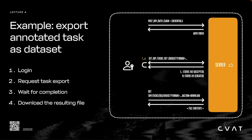Here's an example showing how to export an annotated task as a dataset. First, we'd log in by sending POST requests to our login endpoint in order to get our authentication token, like before. Assuming we have already created and annotated a task, we would then send GET requests to our task ID dataset endpoint. These requests should include a few parameters, such as the format we would like to export our dataset to. The response to our first request should have a 202 Accepted status, meaning the dataset preparation has started on the server. We need to keep sending the same request until we get the 201 Created status. At this point, we should add the action=download query parameter to start downloading. The file we download will contain the dataset with annotations.